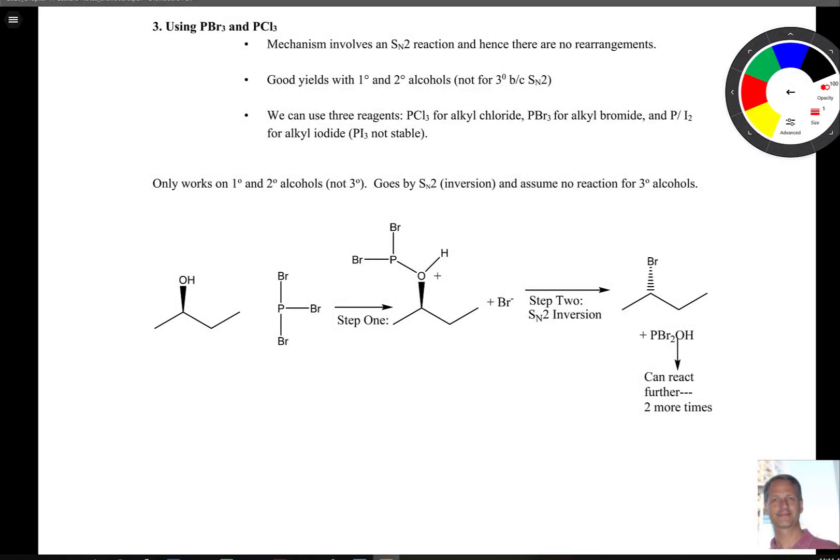Now we're going to see two additional reactions that convert alcohols into alkyl halides. The first is the use of PBr3 and PCl3. The mechanism involves an SN2 reaction, hence you avoid rearrangements, and it gives you good yields with primary and secondary alcohols. Not for tertiary, because no tertiary SN2 reactions really are going to occur.